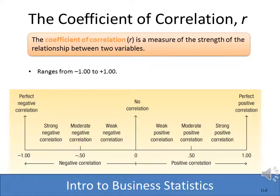We're going to compute the coefficient of correlation, represented by R, which is a measure of how strong the two variables are related. It can range from negative 1 to positive 1. If our R was computed to be positive 1, that means there's a perfect or 1-to-1 correlation — for every sales call made, we would sell one copier. Negative 1 would be the opposite. It would be very rare, if not impossible, to run into an R of exactly 1.